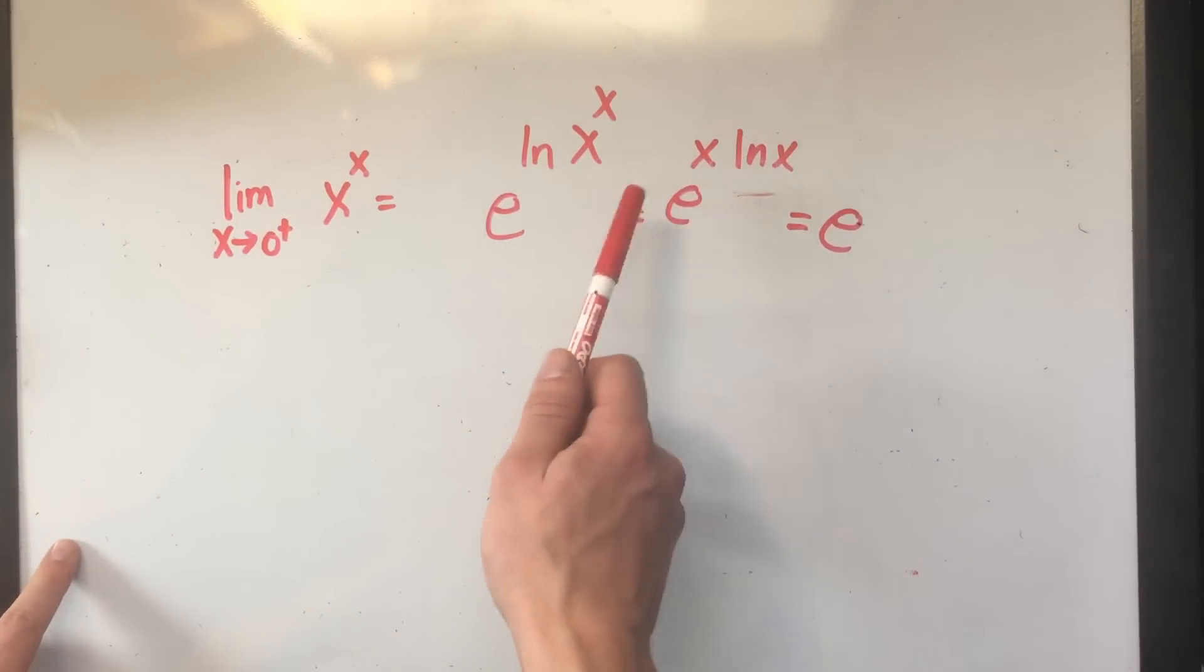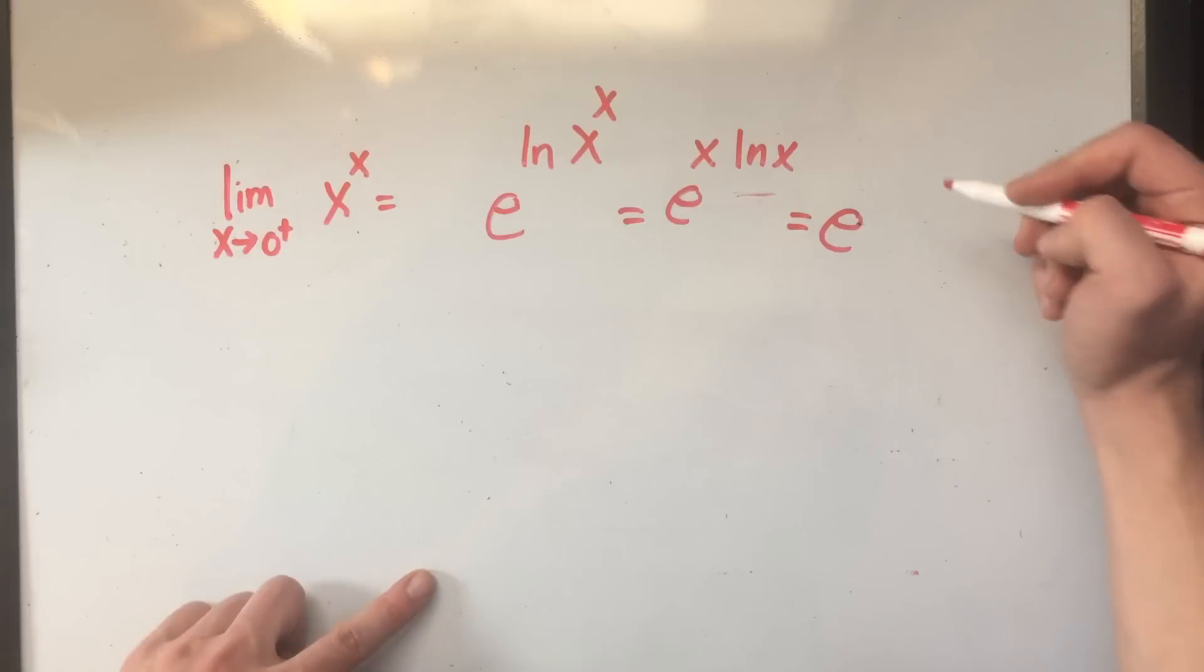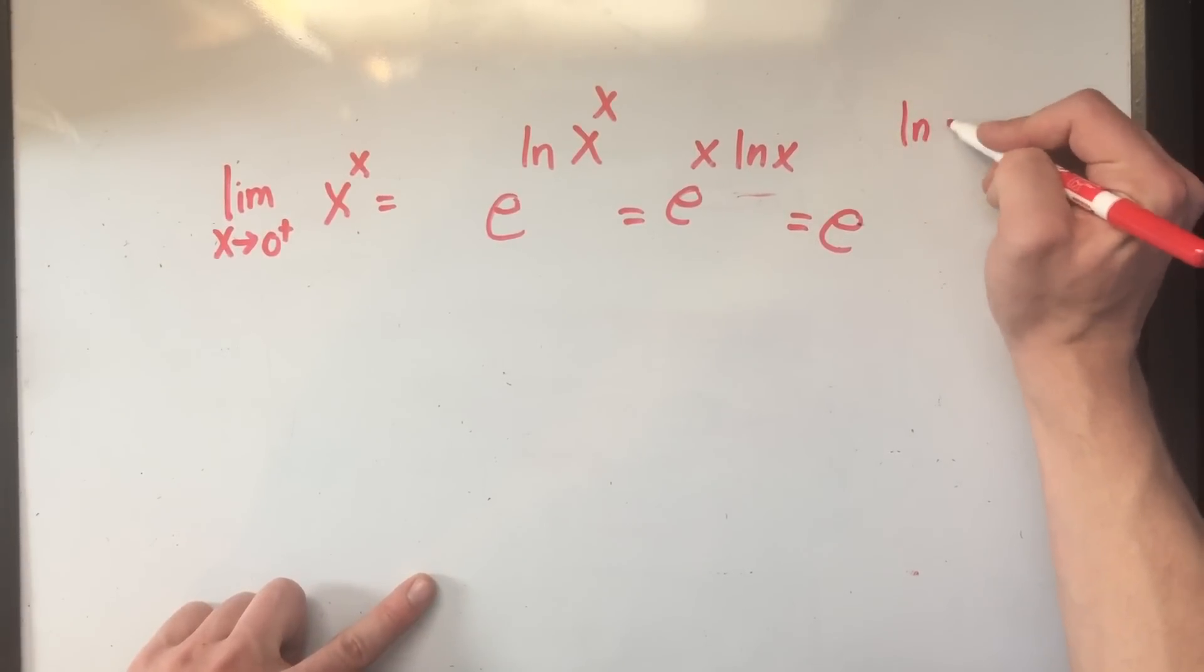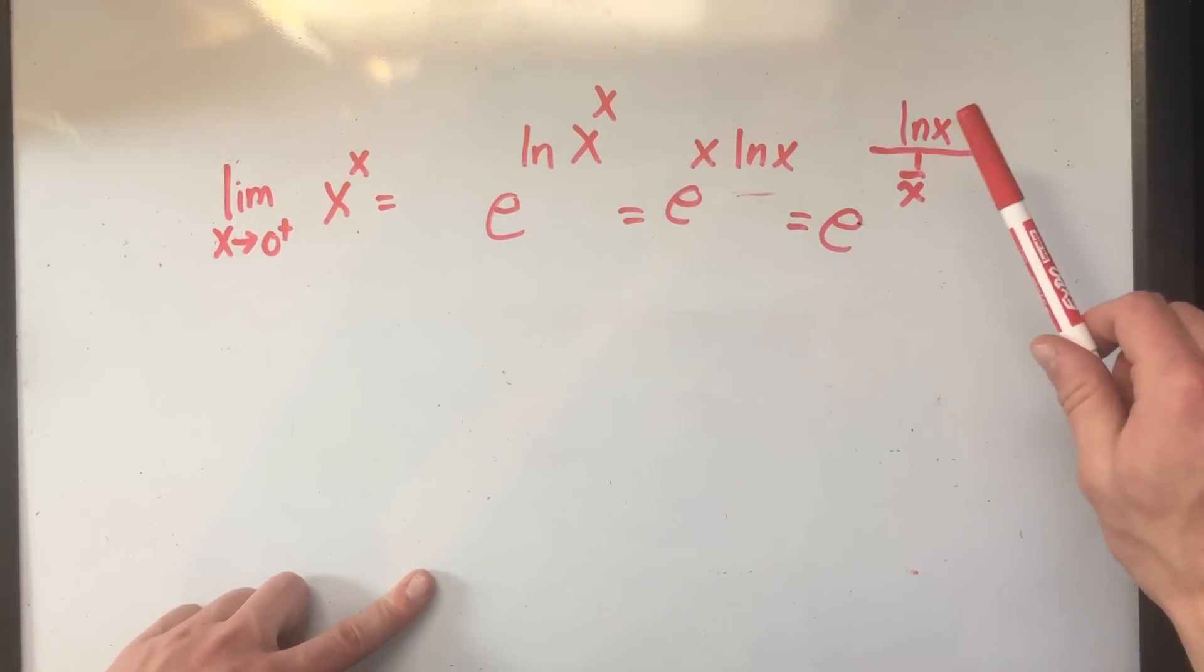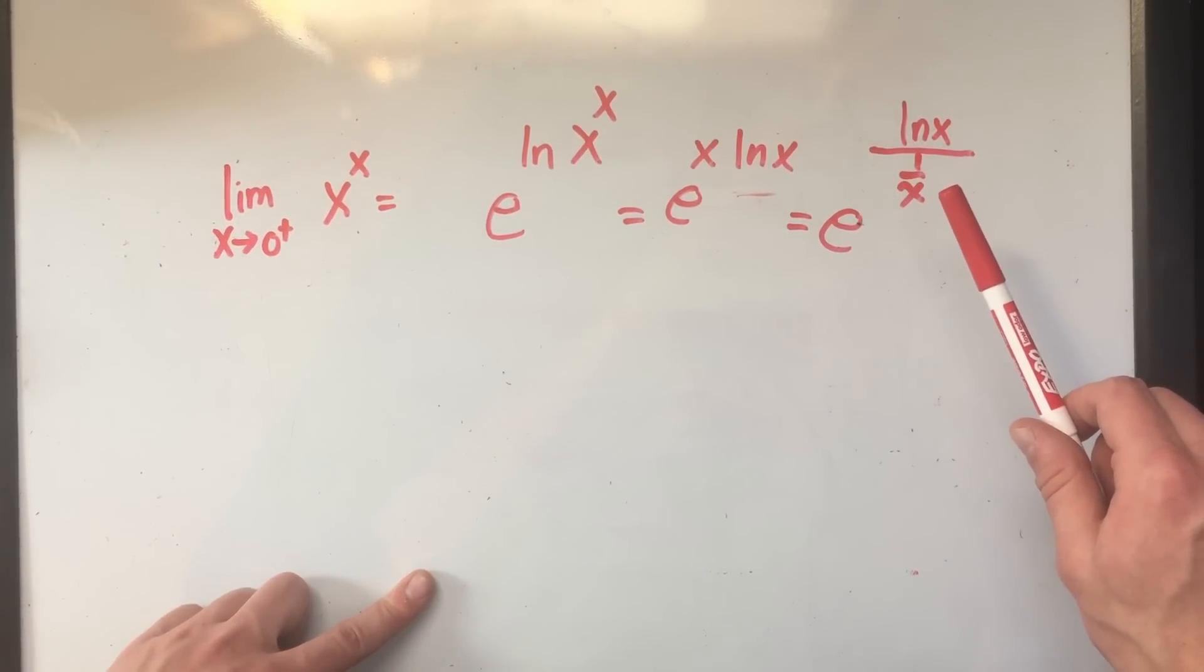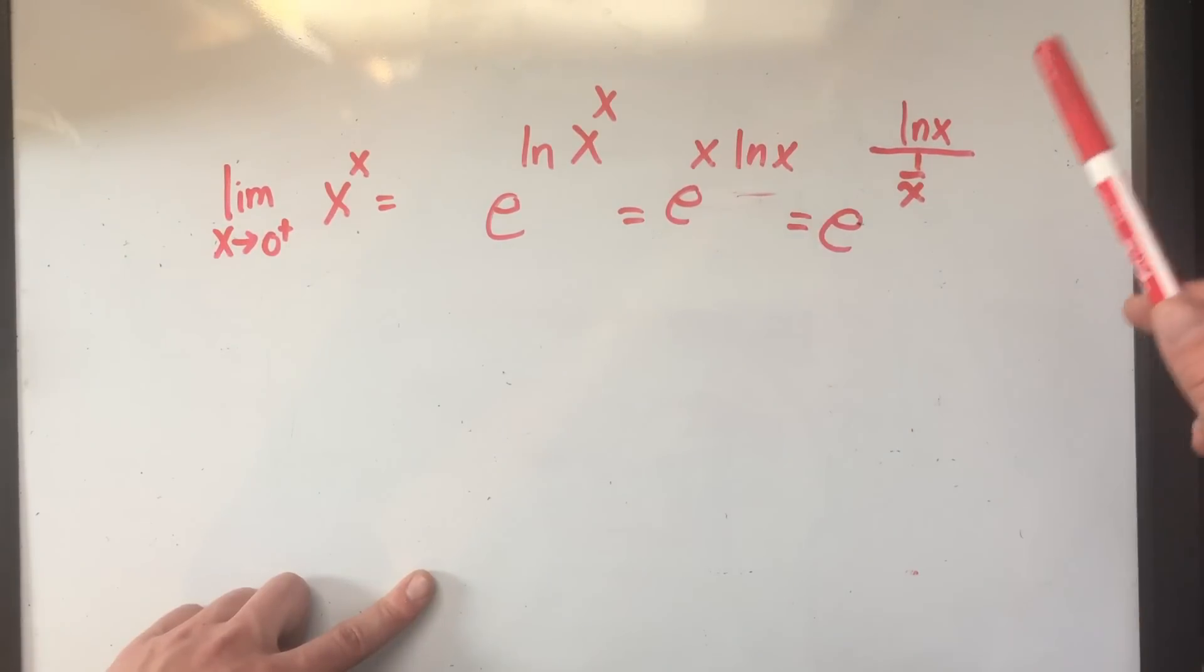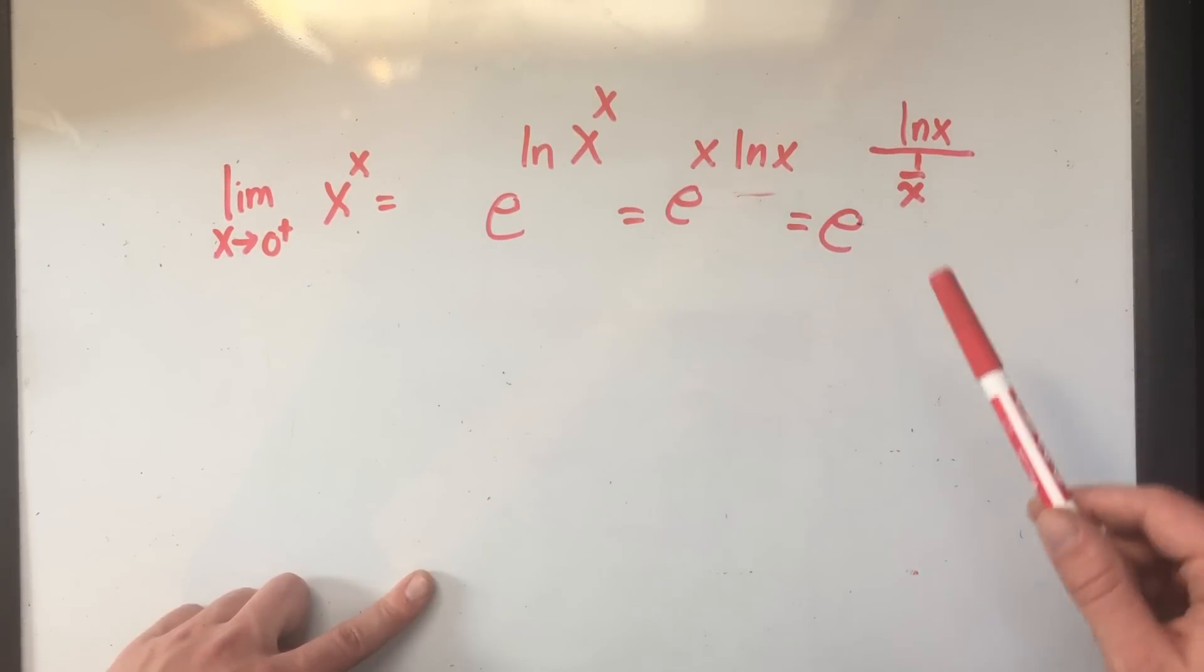Now I'm going to write this as a fraction. That's the trick. So if I use my properties of fractions, I think that's allowed. Right? Because if I have something over a fraction, that's the same as multiplying the denominator's reciprocal. So x times ln x is the same as ln x over 1 over x.